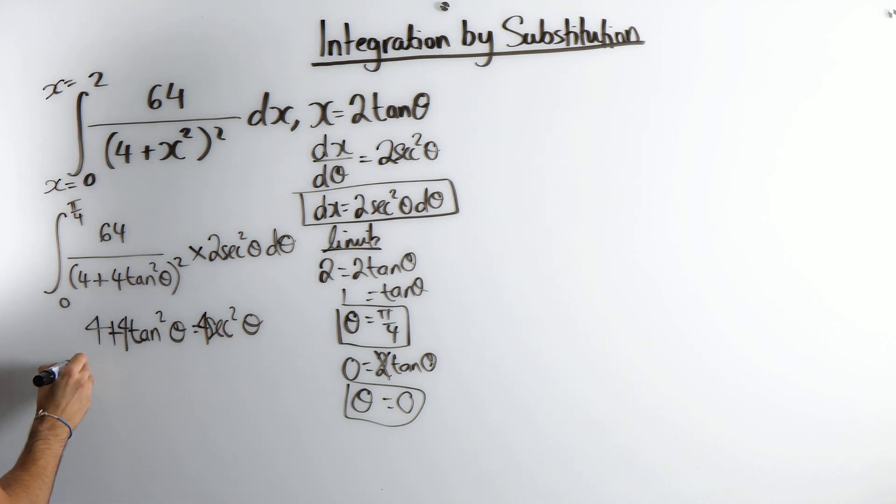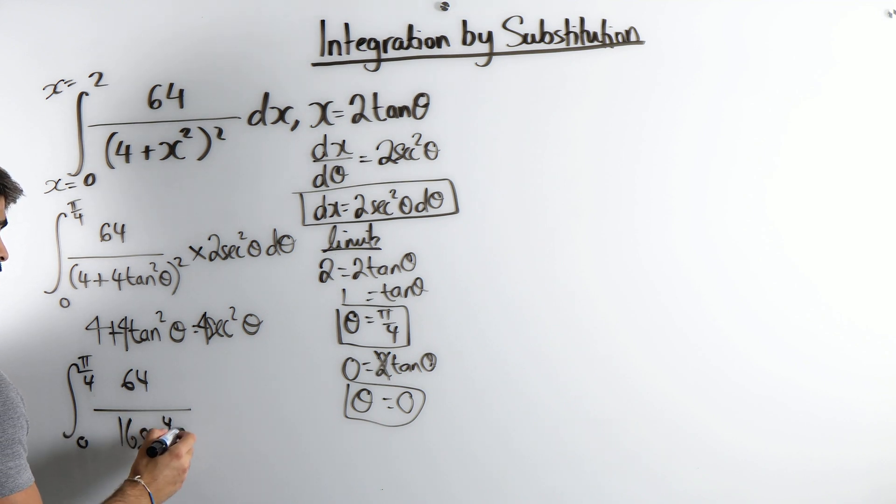So I get the integral between 0 and pi over 4 of 64 over that, which is 4 sec squared, which when we square it is 16 sec to the power of 4 times this.